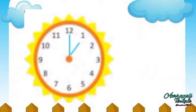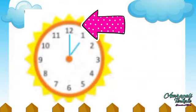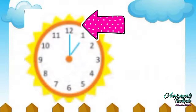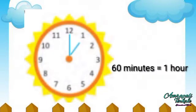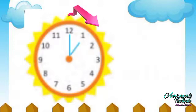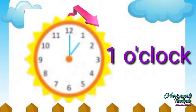When the long hand moves forward starting from 12 and reaches 12 again, it has completed 1 round. The time it takes to do this is 60 minutes or 1 hour. In that time, the hour hand moves from 12 to 1.